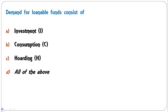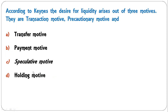Demand for loanable funds consists of — interest, consumption, hoarding, or all of the above? Demand for loanable funds = I + C + H. So D — all of the above — is the correct answer.